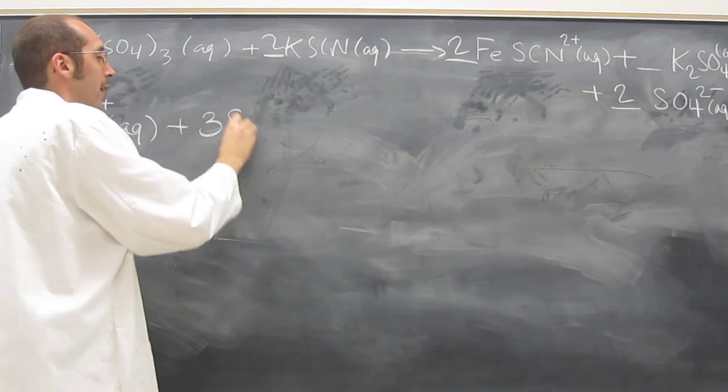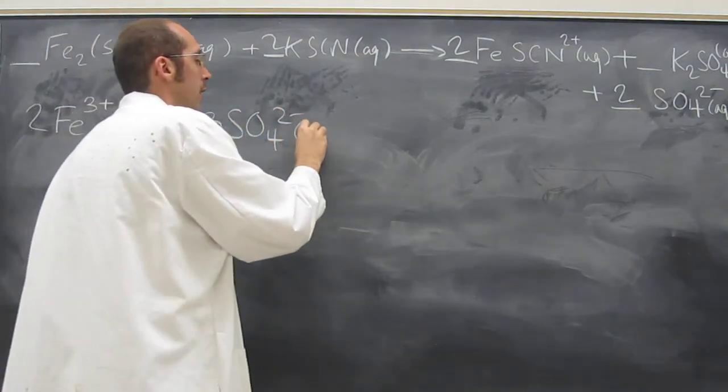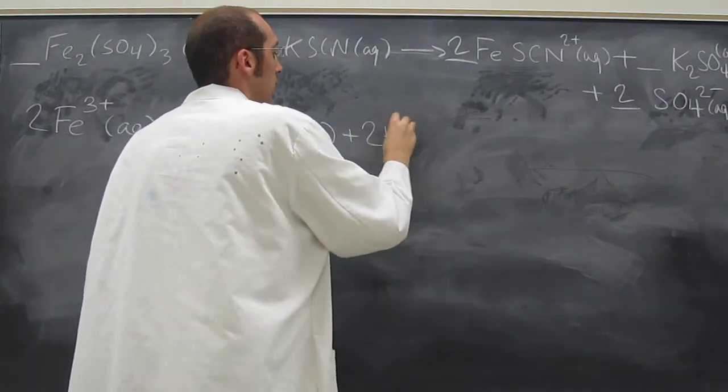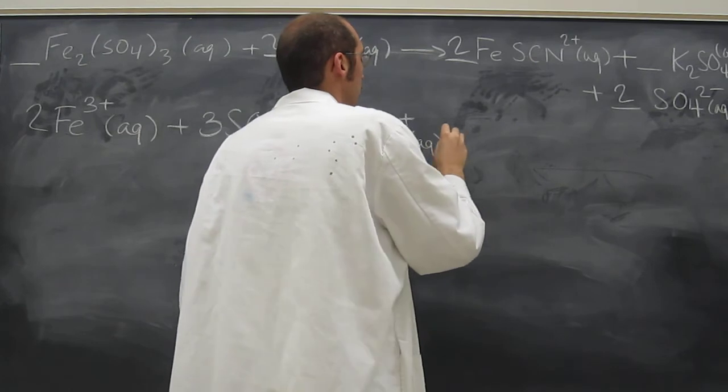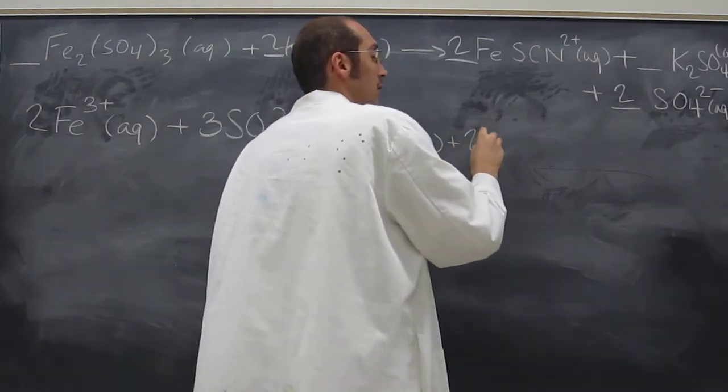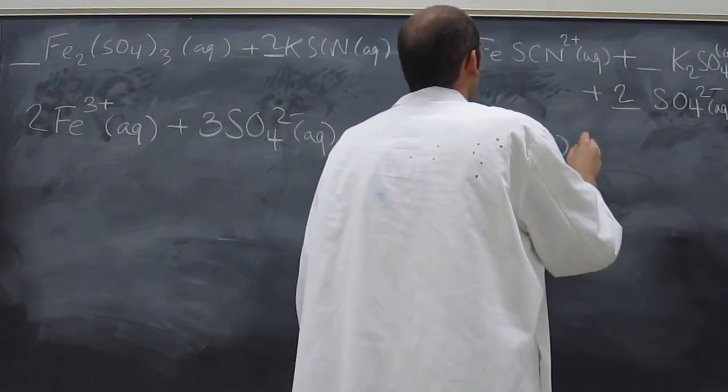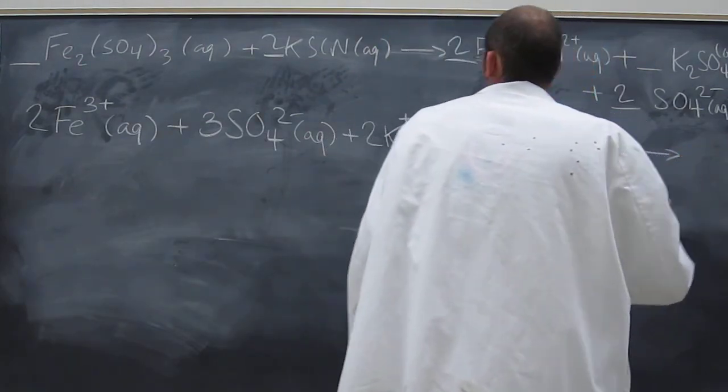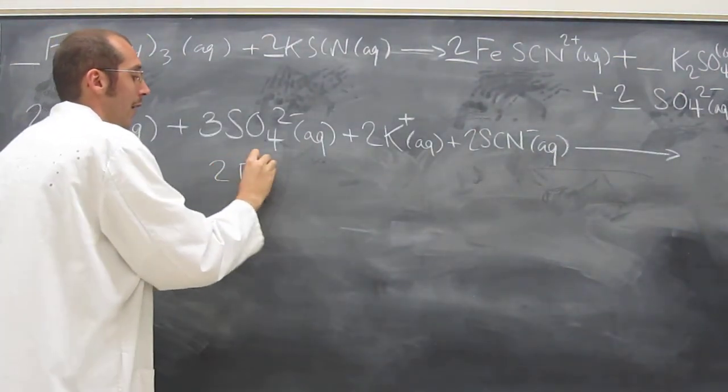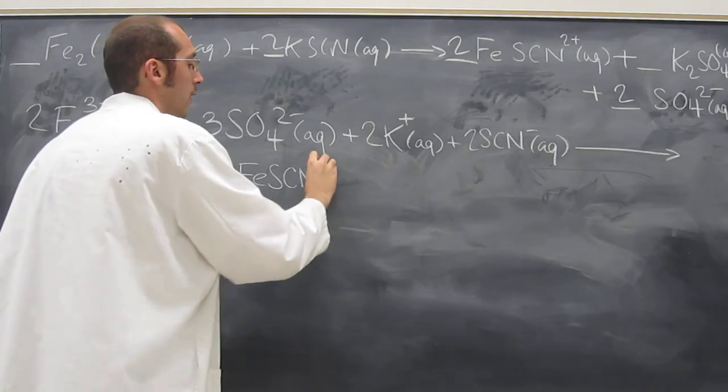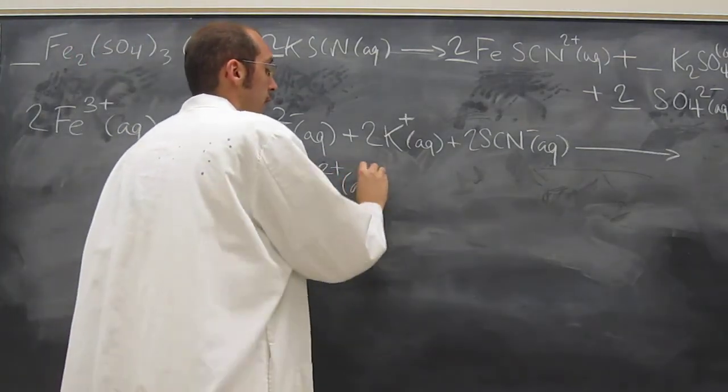Plus 3, help me out guys. So 4, 2 minus, aqueous, plus 2 K plus, aqueous, plus 2 SCN minus, aqueous, goes to 2 Fe SCN 2 plus, aqueous.